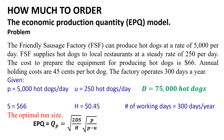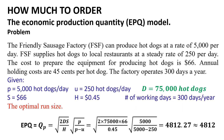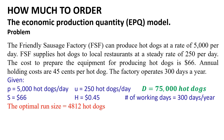Now substituting into the QP equation: QP equals the square root of (2 × 75,000 × 66 / 0.45) multiplied by the square root of (5,000 / (5,000 − 250)), which equals approximately 4,812 hot dogs. Therefore, the optimal run size is 4,812 hot dogs.